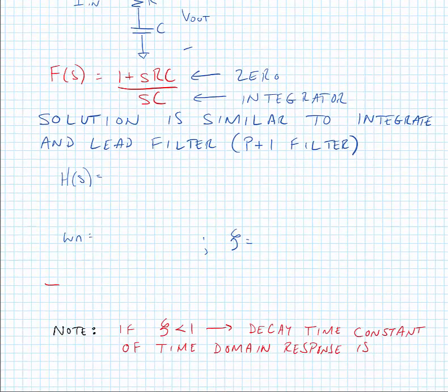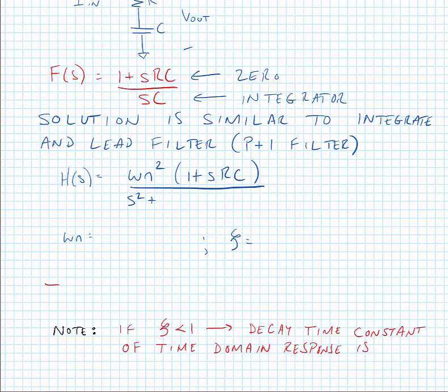So our new closed loop transfer function is omega N squared times 1 plus S R C divided by S squared plus 2 zeta omega N plus omega N squared. And, our natural frequency omega N is equal to I P times KVCO divided by 2 pi times C. Zeta is equal to R over 2 times the square root of I P times C times KVCO over 2 pi.